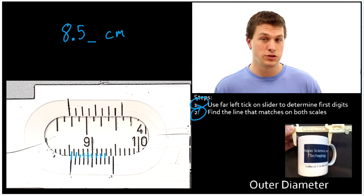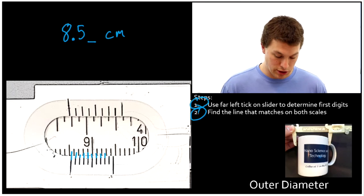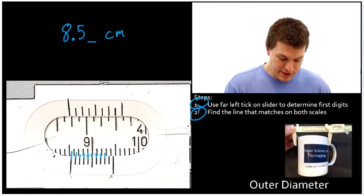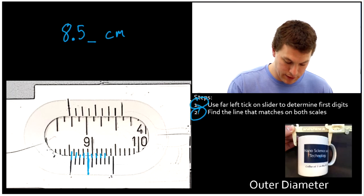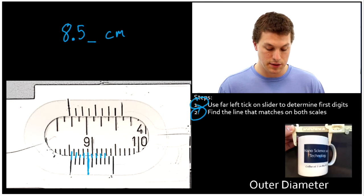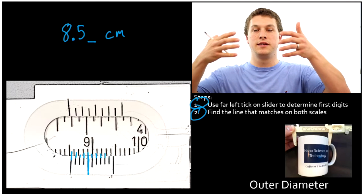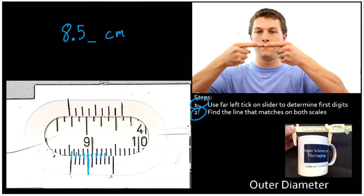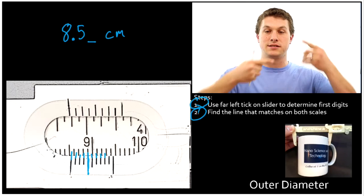Sometimes there'll be a little bit of a judgment call as to which one lines up the most, but only one or two should look like they line up. And what we see here is that this guy lines up the best. It lines up perfectly with the ticks on the main scale. Basically, if you think about our fingers as being the ticks on each side of the scale, we're looking for where the fingers come together exactly like this. We don't want them slightly mismatched.